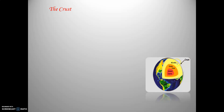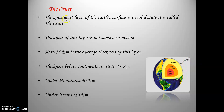This is called the crust — the outer layer. You can see this blue color; this is the crust of the Earth's interior. The uppermost layer of the Earth's surface is in a solid state, and it is called the crust. Basically, the crust is in a solid state and is the outermost layer of the Earth.